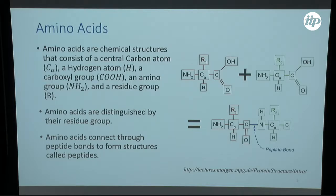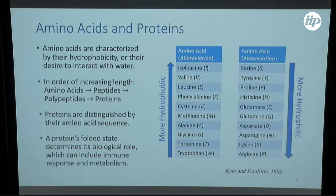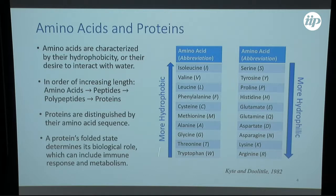We can link two amino acids through something called a peptide bond, where they link, dehydrate, release a water molecule, and this structure is now called a peptide. For all 20 naturally occurring amino acids, one way we can characterize these is according to their hydrophobicity — their desire to interact with water or stay away from water, the environment they're embedded in. In this table, certain amino acids are more hydrophobic and others are more hydrophilic.